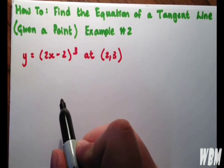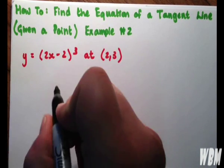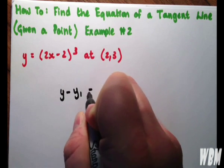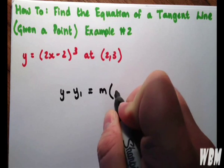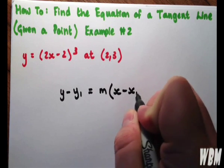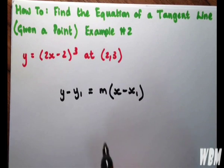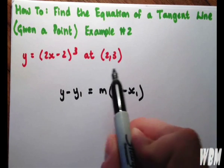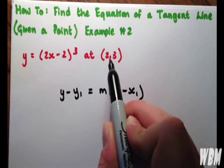Now the first point is to recall the point-slope equation, which is, of course, y minus y₁ equals m(x minus x₁). Now, we know that y and x are variables and that y₁ and x₁ are 3 and 2.